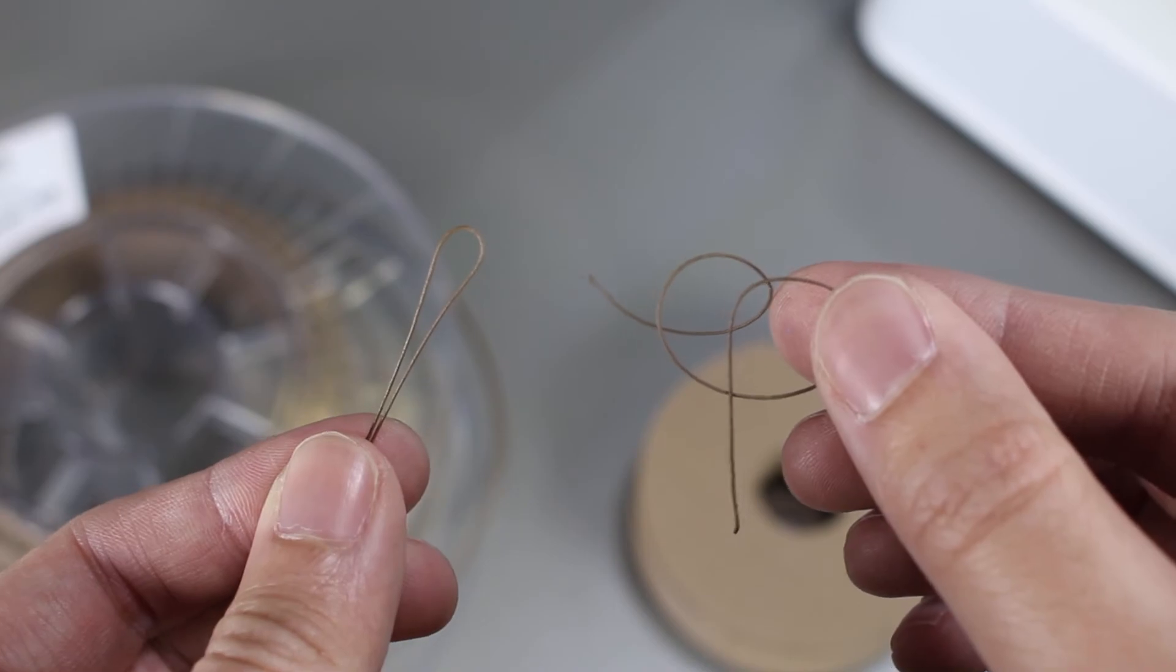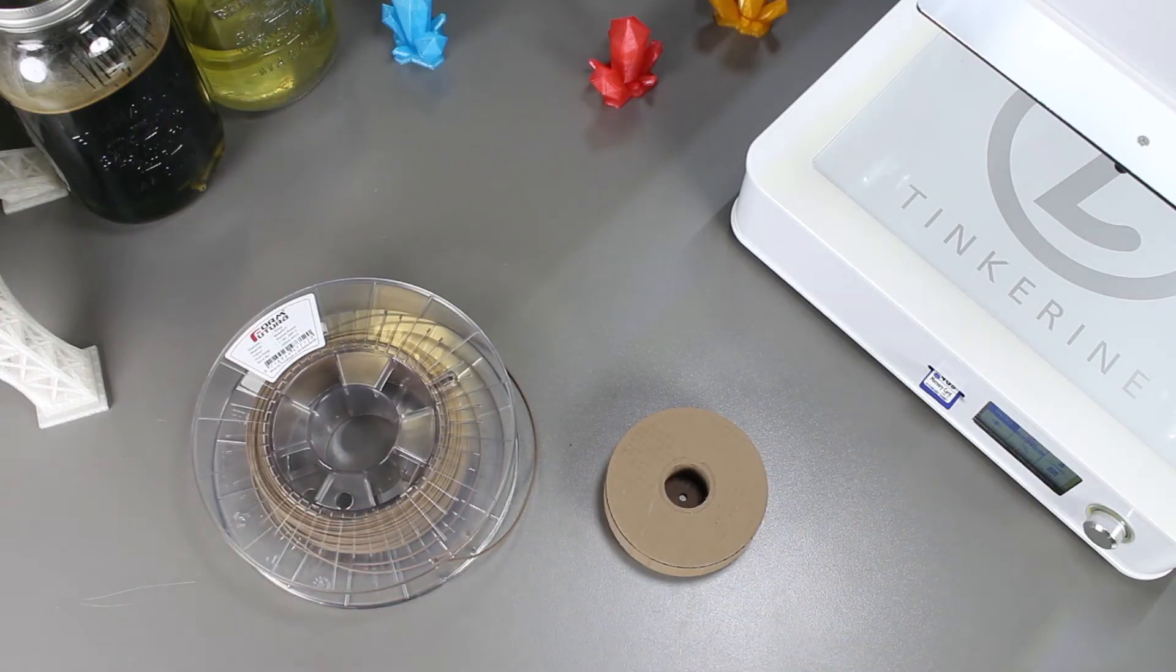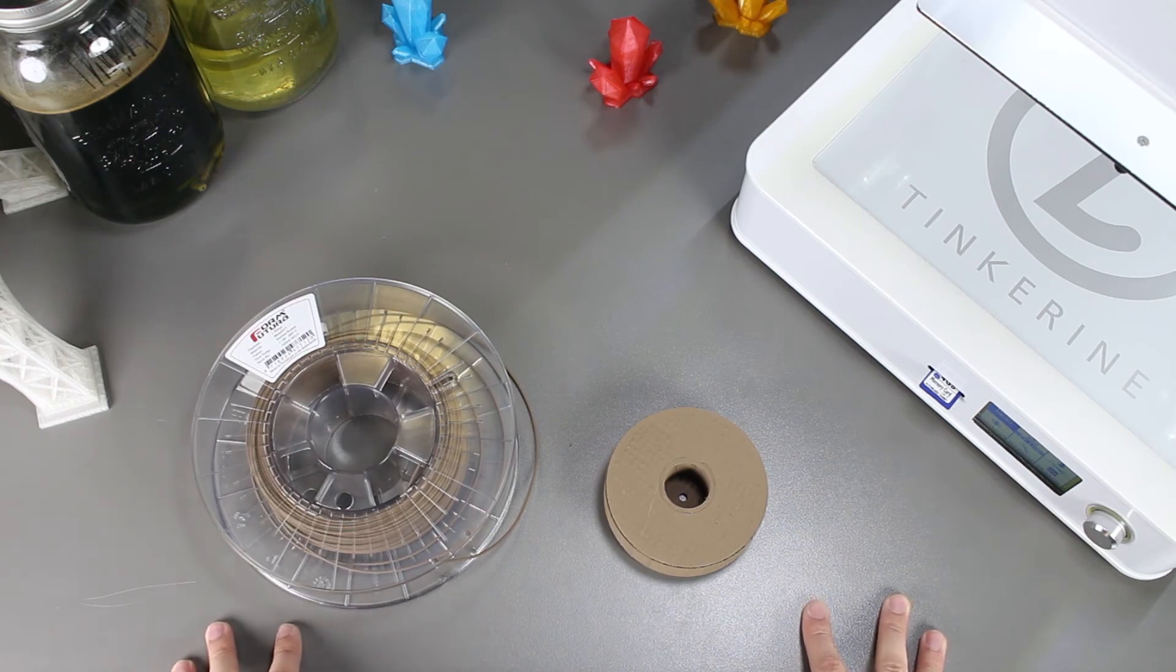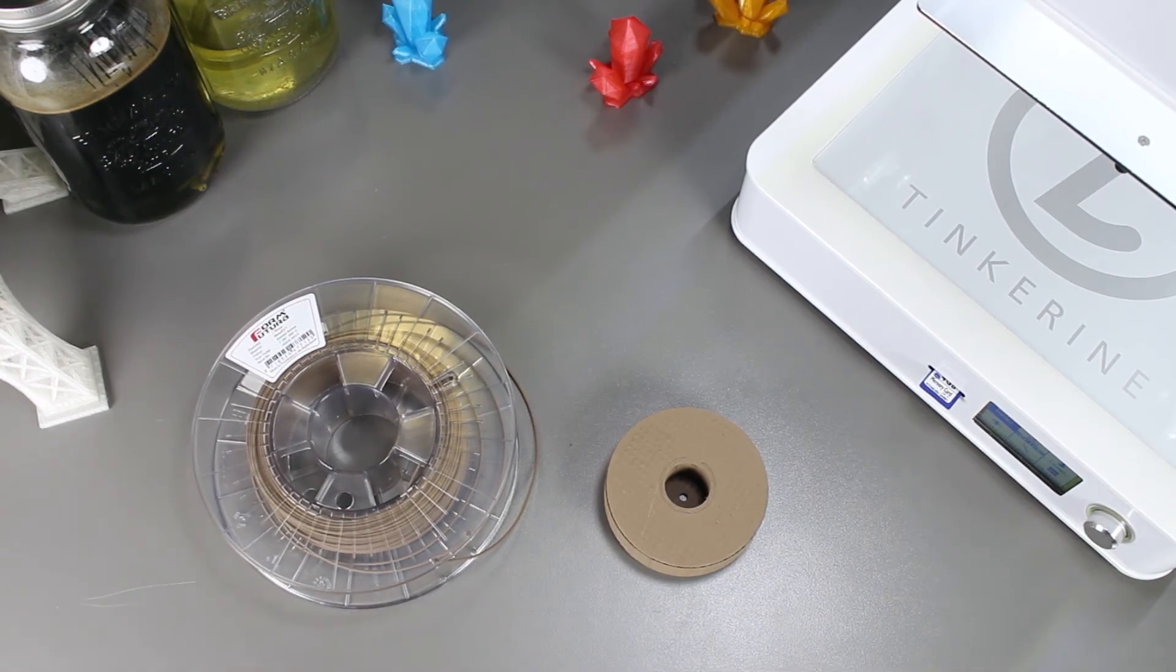Eventually, the nozzle diameter will get larger and then you'll get overextrusion. Remember, a damaged nozzle by the use of third-party filament will void your warranty. That's the end of our experiment today.